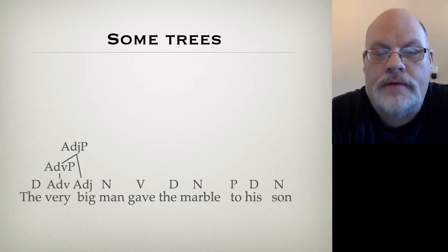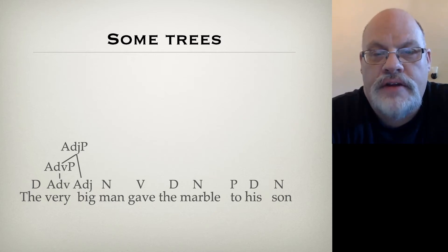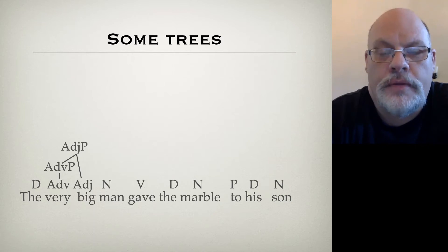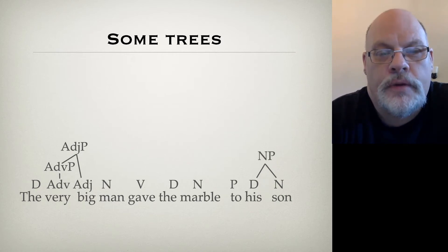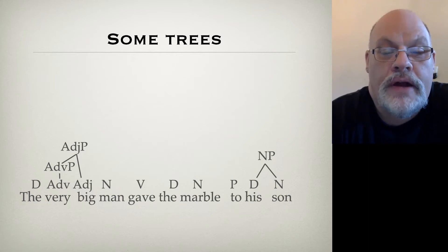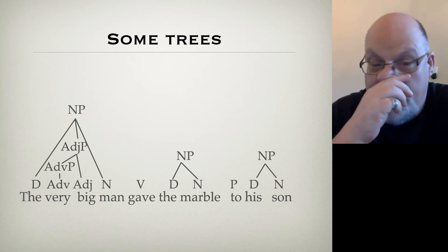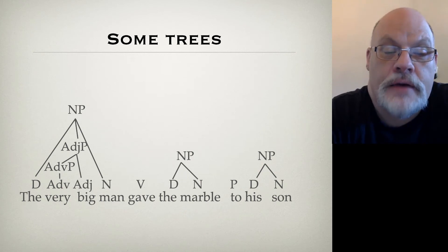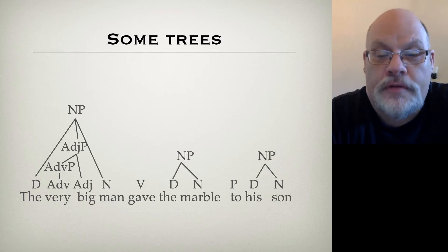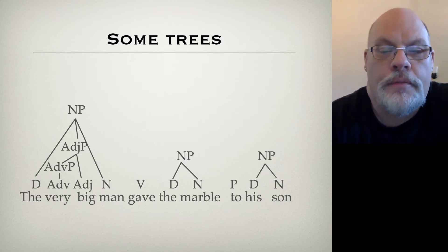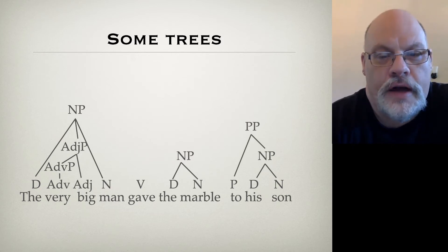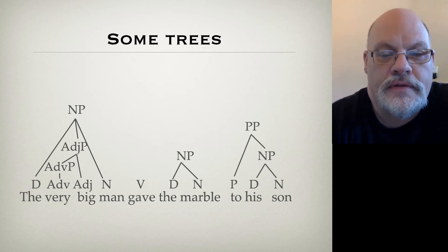Now we're going to start on the right-hand side of the sentence and do our noun phrases. We have a determiner followed by a noun — that is licensed by our noun phrase rule. We build a noun phrase on top of that. We have another example with 'the marble.' And at the beginning of the sentence, we have the determiner, the adjective phrase, and the noun together forming a noun phrase. So we've got three noun phrases. For the prepositional phrase, we have a preposition followed by a noun phrase — that is by definition a prepositional phrase.